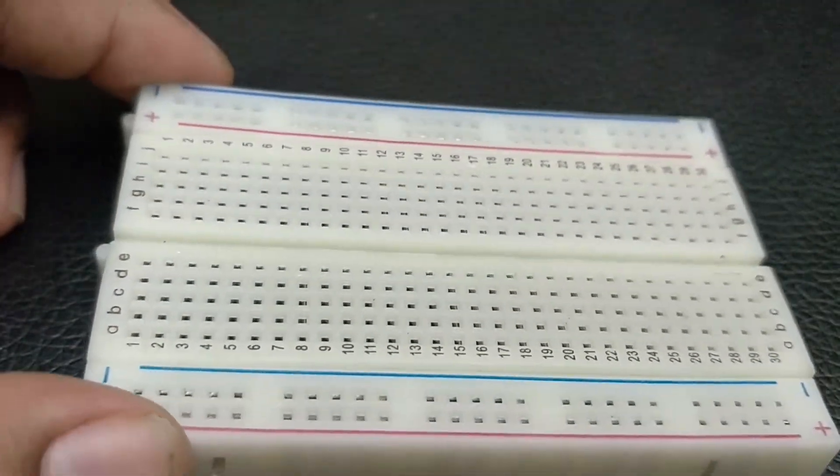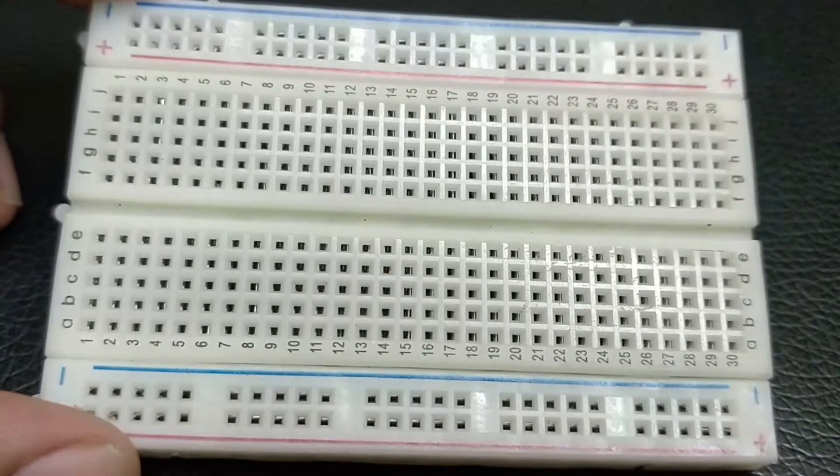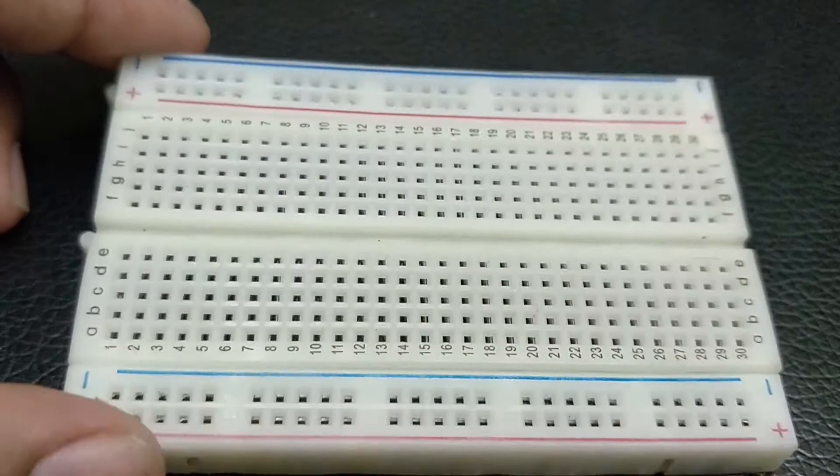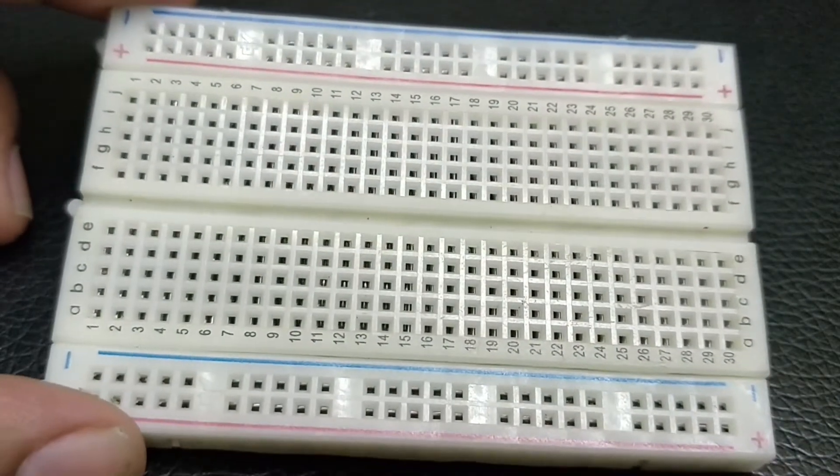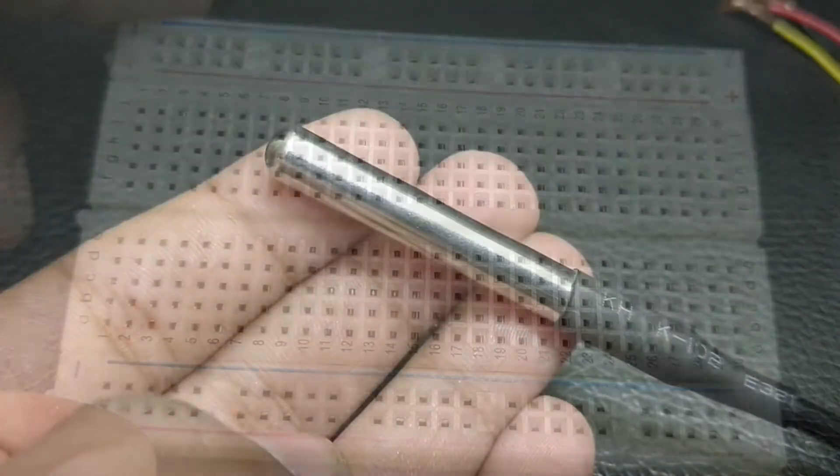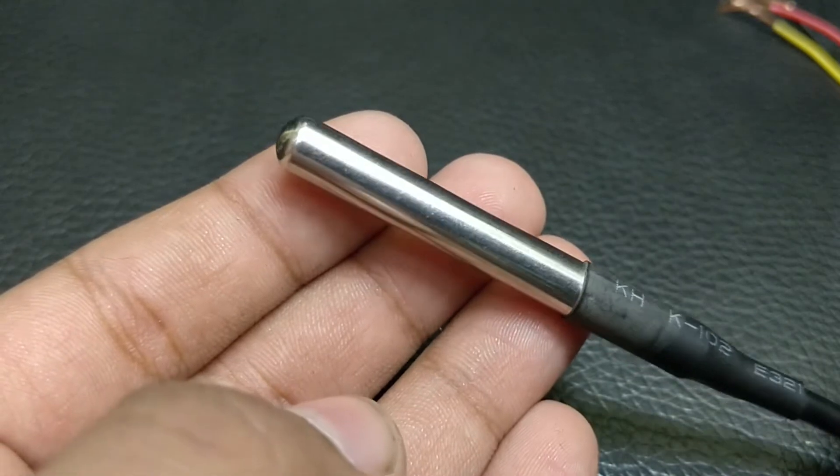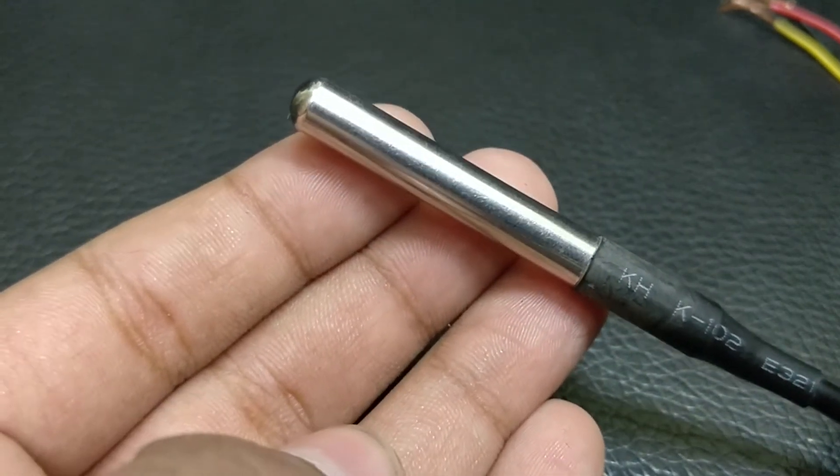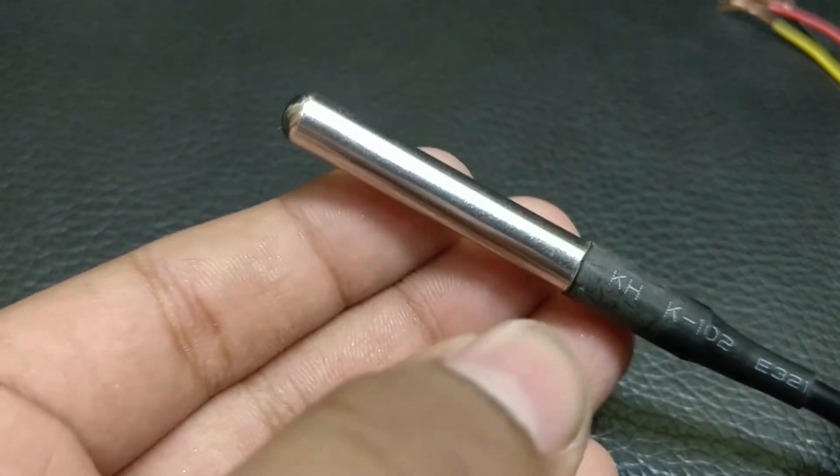We have a breadboard to connect the sensor and other components. I will show you a schematic diagram of how to connect in a short while. This is the waterproof temperature sensor, DS18-B20. This is a one wire temperature sensor from Dallas Semiconductor. That's from the datasheet.